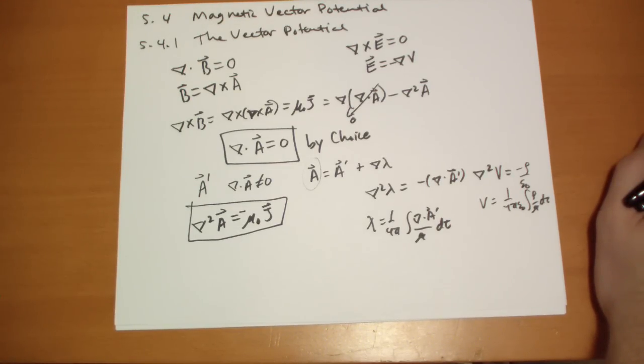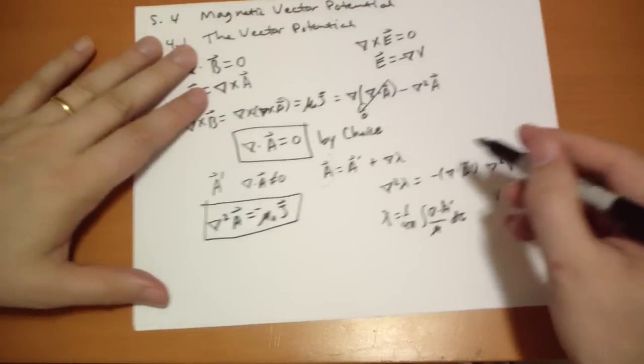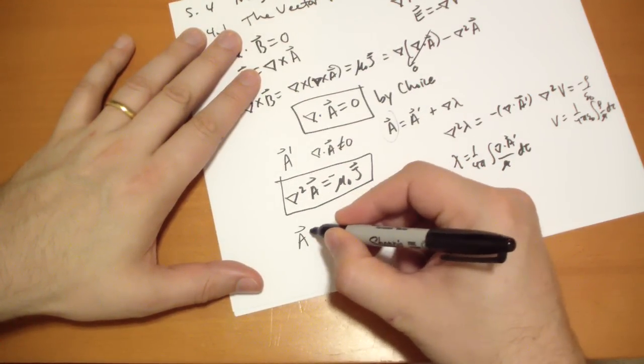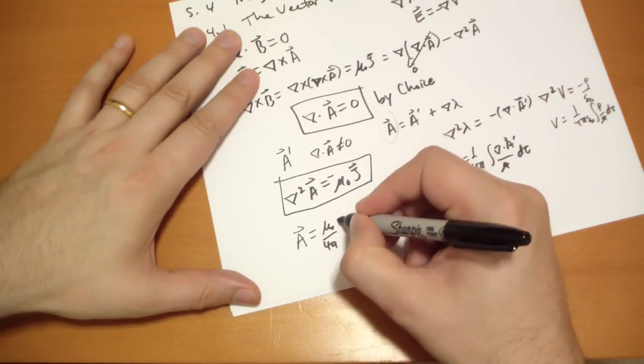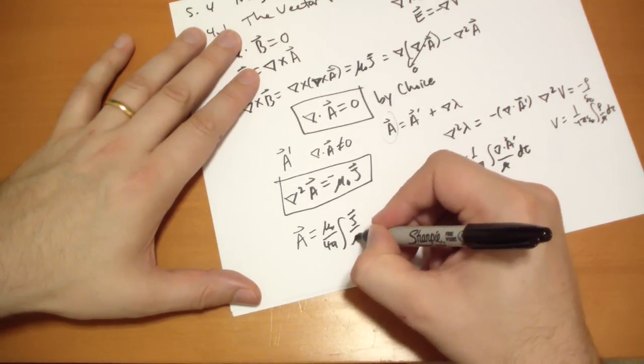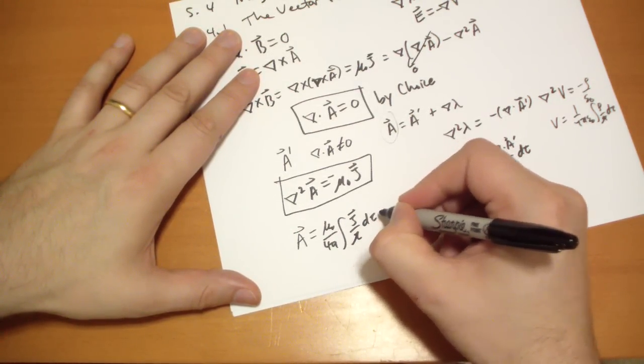And assuming that the current goes to zero at infinity, then we can simply write down the answer. A vector is equal to μ₀ over 4π, the integral of the j vector over r dτ.